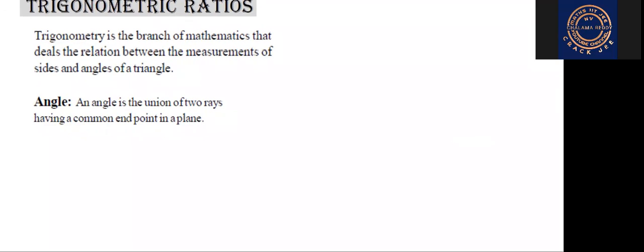See the diagram. This is one line and this is another line. These are having the same common point. That point I am denoting with O. This is called the vertex. And here I am denoting one point A. OA is called the initial line.